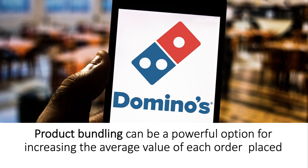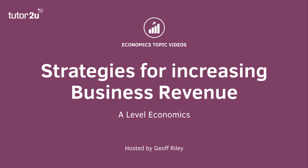A product bundle is basically where you put together a combination of goods and services sold to consumers in a single package. Typically the products in a bundle are complementary to each other. Domino's is a great example - their app is brilliant at nudging you to add garlic bread or a discounted Coke to your order. Bundling brings products together into a single price, and as a result the average order value goes up. So this has been a look at some of the things we've been discussing in lessons today - some of the strategies that businesses might use if they want to increase their revenue.